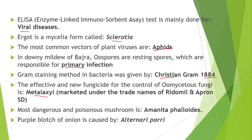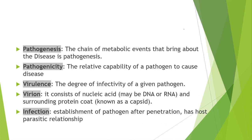The trade name of metalaxyl is Ridomil or Apron. The most dangerous and poisonous mushrooms are Amanita phalloides. Purple blotch of onion is caused by Alternaria porri.